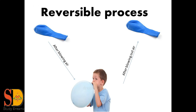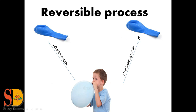Next I have another reversible process — a balloon. After blowing air into this balloon, the shape and size of the balloon gets completely changed. And when we let out the air, the size and shape of the balloon returns to what it was before. So this is also a reversible process in which we get our original substance back.